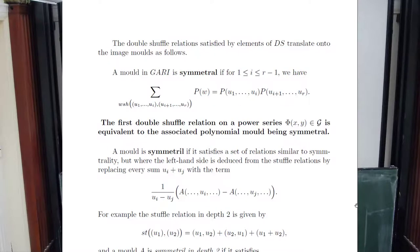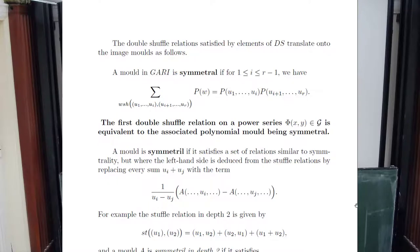Now I'll give the translation of double shuffle into mold language. If a power series satisfies double shuffle, then the corresponding mold satisfies the following. The first double shuffle relation—being group-like—is expressed as 'symmetral' in Écalle's notation. If P is a function of variables u_1,...,u_r, you shuffle two sequences, substitute the permuted variables into P, sum over all shuffles, and get the product. This is the case if and only if, when P is a polynomial mold, it comes from a group-like power series. For a general mold it's just called symmetral—an extended property.